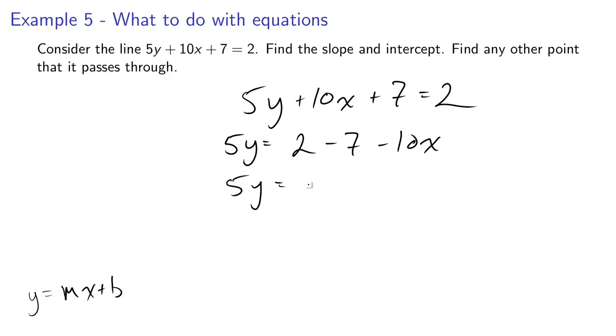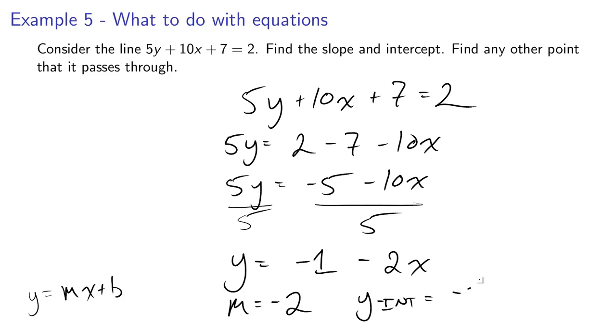Let's do that here. We'll have 5y = 2 - 7 - 10x. 5y = -5 - 10x. Now to get y by itself, like it is in y = mx + b, we have to divide the whole equation by 5. What we'll get is y = -1 - 2x. So our slope m = -2, and our y-intercept b = -1.